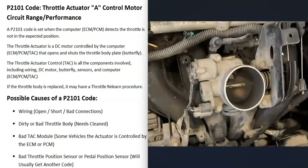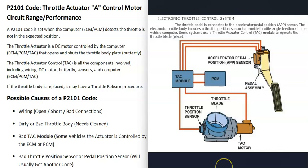When throttle bodies were first introduced, they used a cable that went down to the gas pedal to pull open that butterfly plate. But in many newer vehicles, they got rid of that cable and replaced it with an electronic system. There's a sensor down on the gas pedal that monitors how much the pedal has been pressed and reports this information to a computer. That computer then controls a small DC motor on the throttle body that opens and closes the plate.